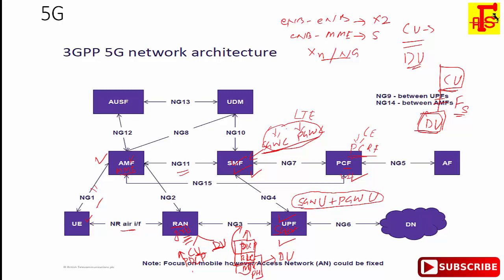The AF — Application Function — influences traffic routing based on interaction with the policy framework for policy control. The application function is responsible for traffic routing depending on what type of policy framework is designed and being interacted with.